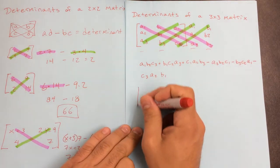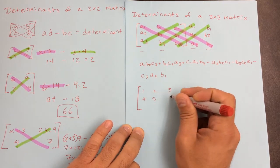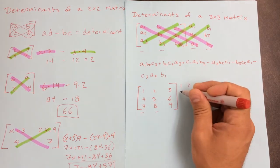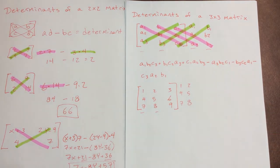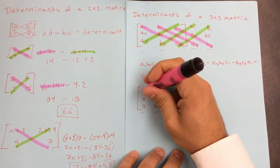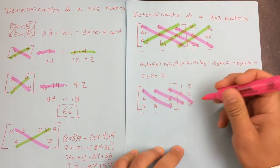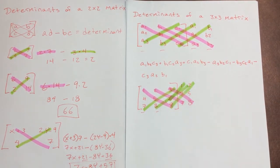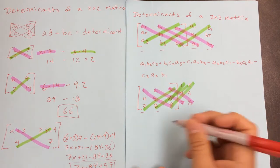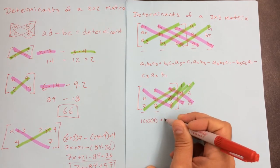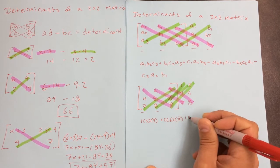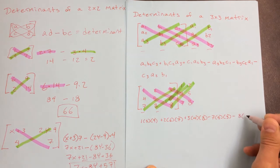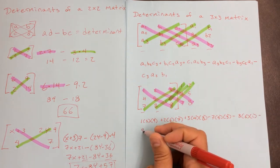Let's do it with an actual number example using really simple numbers. The first thing I need to do is rewrite my first two columns on the outside of the matrix. Using my highlighter, the positive diagonals and negative diagonals are identified. So it's going to be: 1·5·9 + 2·6·7 + 3·4·8 minus 7·5·3 minus 8·6·1 minus 9·4·2.